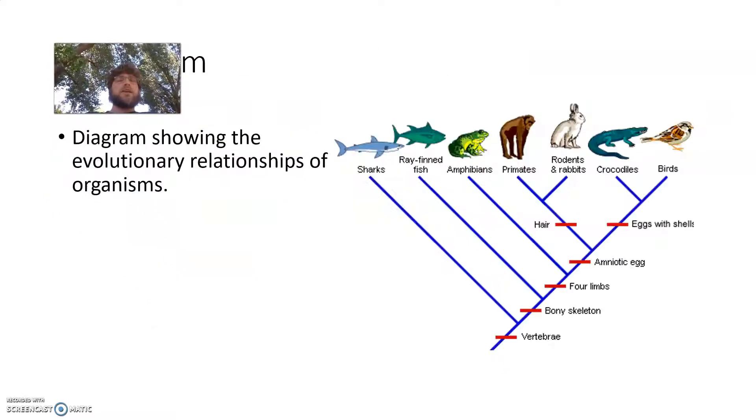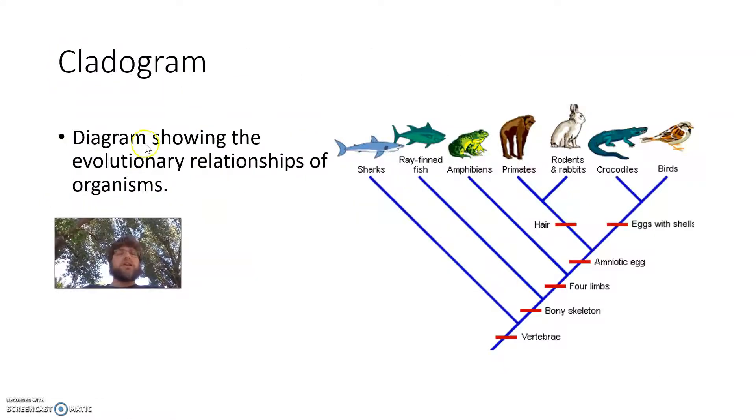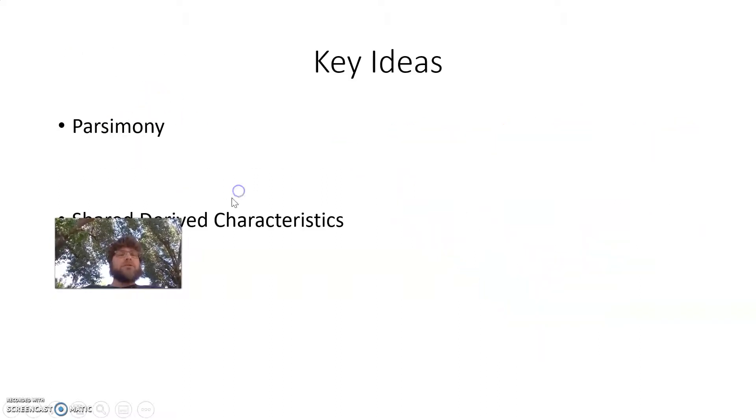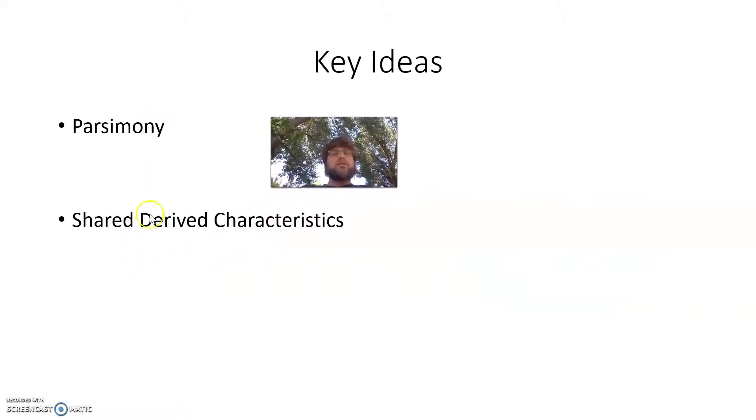Alright, so when we're making a cladogram, which is a diagram showing evolutionary relationships of organisms, I want to keep two ideas in mind. One, parsimony, and two, shared-derived characteristics. These two ideas will help me make my cladogram.